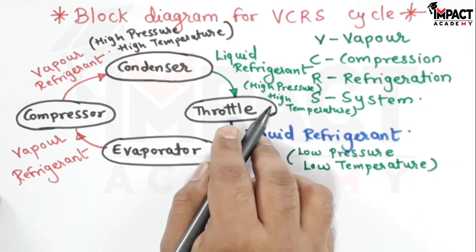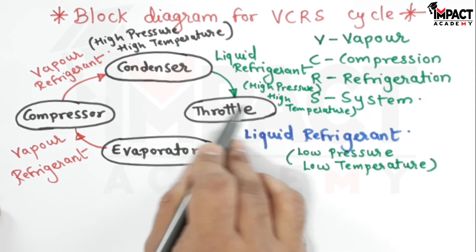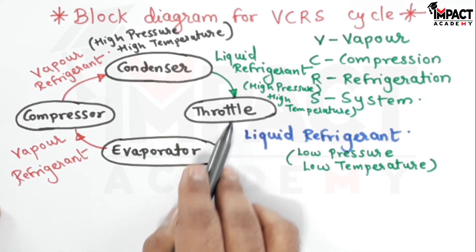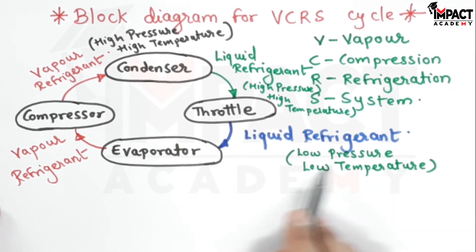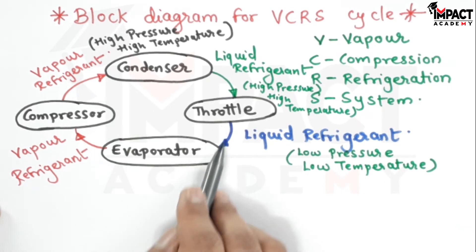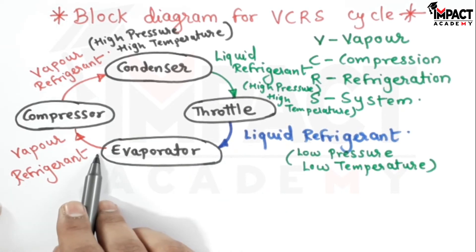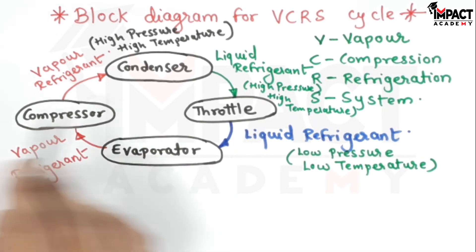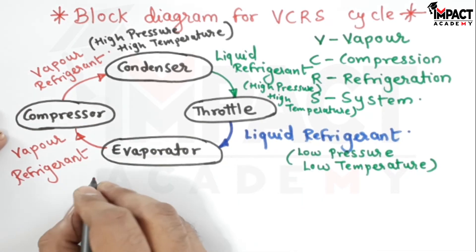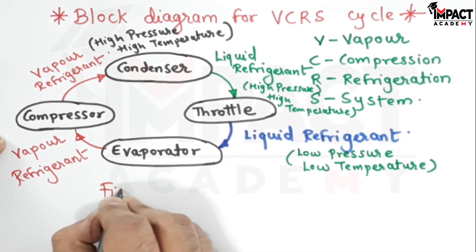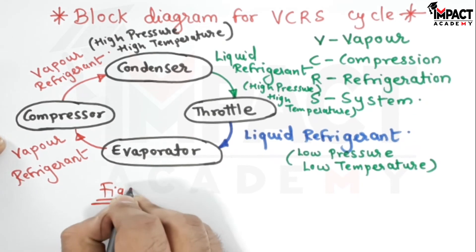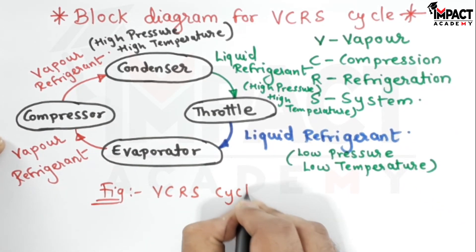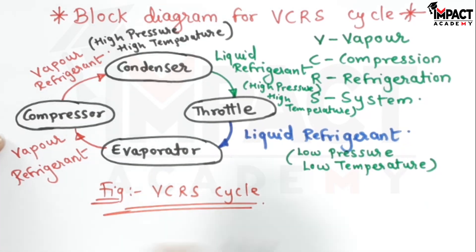At the entry to the throttle or expansion valve the refrigerant is at high pressure and high temperature. Once throttling occurs, the pressure drops and the temperature drops, and the liquid refrigerant then goes into the evaporator and goes on absorbing heat. That was the block diagram explanation for a VCRS cycle.